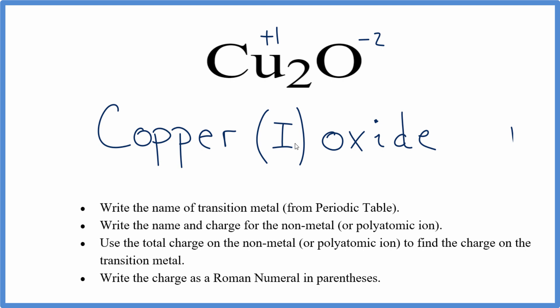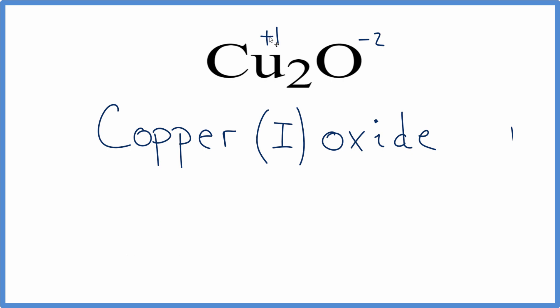Understand that this I tells us that each copper atom—we have two copper atoms—each has a +1 charge. This is Dr. B with the name for Cu2O, copper (I) oxide.